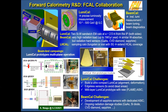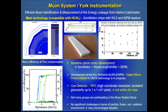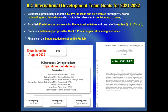Last but not least, the muon detector system did not get particular attention because there are no significant challenges in terms of particle fluxes or radiation environments. The basic options proposed are scintillating strips with SiPM readout; RPC is possible; newer types of MPGD detectors are possible, but there is not much active work in this R&D because the radiation challenges are not significant. Going to a few words about the LC project itself: the International Development Team was established in August 2020 with the idea to establish a pre-laboratory as a first path towards the LC laboratory.